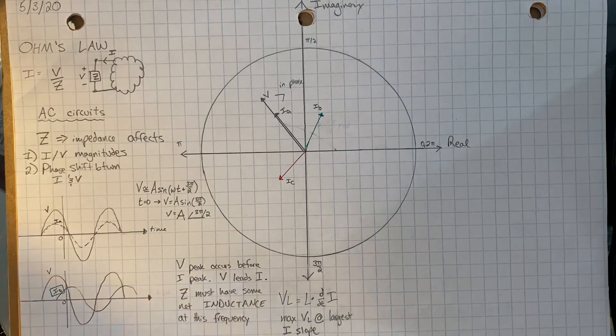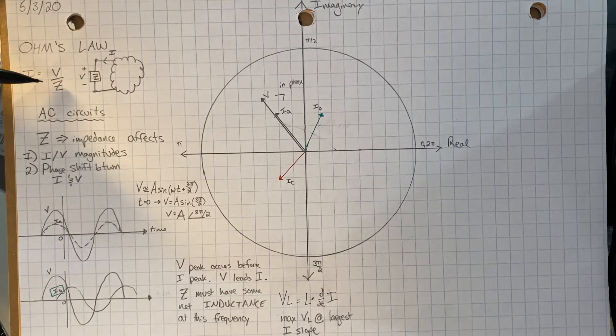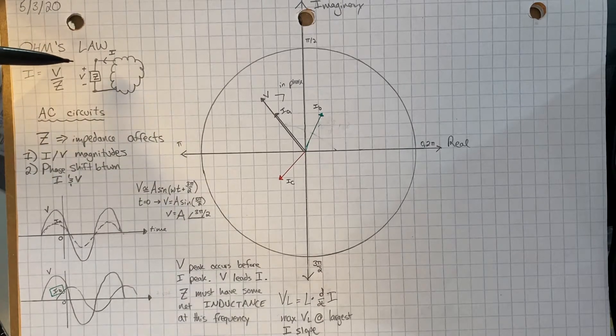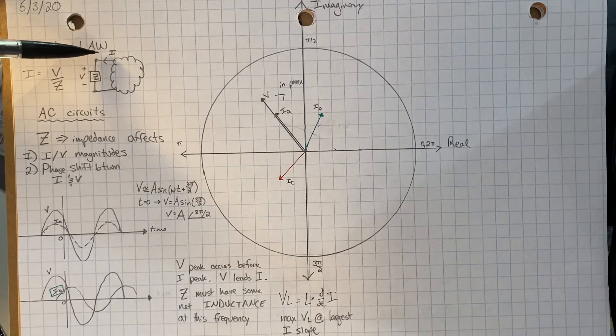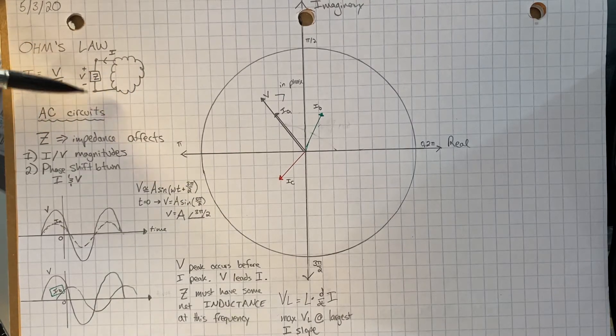Today we're talking about Ohm's Law, which states that the current through a device is the voltage across it over its impedance. For passive components like resistors, capacitors, and inductors, we say that for current entering the device, it produces a voltage drop down it.